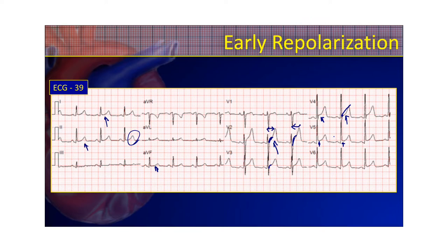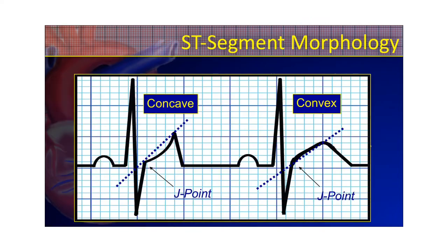Here we have an STE mimic of early repol. Again, I told you about ST-segment morphology. I can't stress this enough: concave is usually not bad, but it could be bad. Convex — just consider it always bad. That's going to be an MI every time.